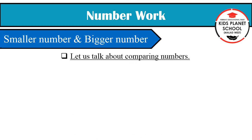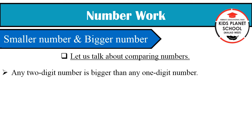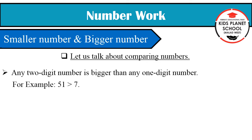Let us talk about comparing numbers. Any two digit number is bigger than any one digit number. For example, here 51 is a two digit number and 7 is a one digit number. Therefore, the two digit number, i.e. 51, is bigger than the one digit number, i.e. 7.